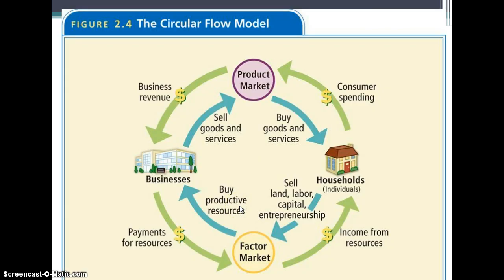In the circular flow model, households spend money that goes into the product market, and that gives businesses money. Businesses can then pay for the resources they need to make their products — that's the factor market — and that money goes back to the households where they can spend it again. Going the opposite direction, households provide land, labor, capital, and entrepreneurship in the factor market, and then they can buy goods and services from the product market. It's a nice circular pattern.